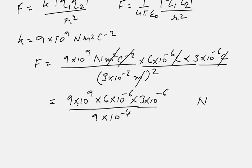Now this 9 cancels out with 9 in the denominator. 10⁻⁶ times 10⁻⁶ gives us 18 in the numerator. Now I will show you a very simple method to deal with these powers of 10: simply write 10 and then write the powers as they appear.